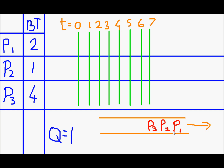P1 will be executed first for one quantum of time. Now its remaining burst time is 1 and it will join the queue at the back. Next is P2's turn. P2 will execute for one quantum of time. Since its remaining burst time is 0, it won't join at the back because it has completed its execution.